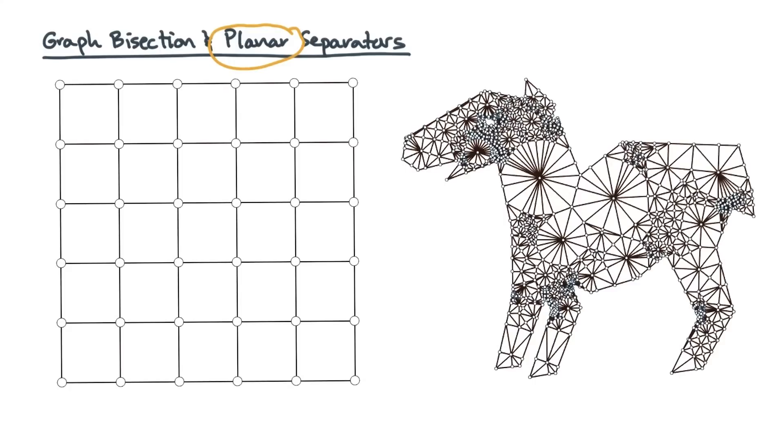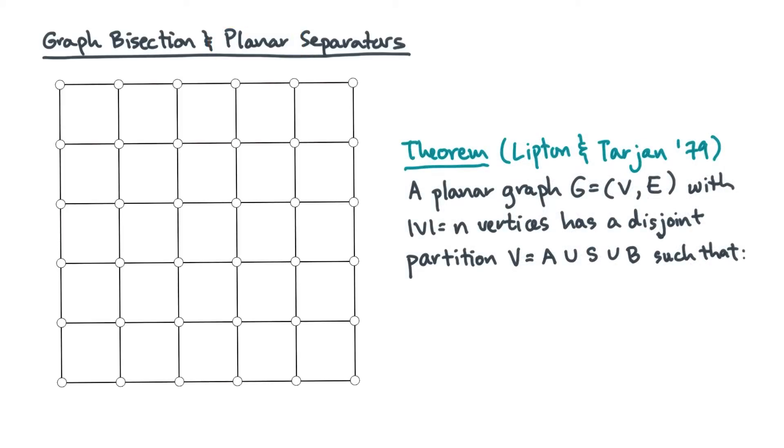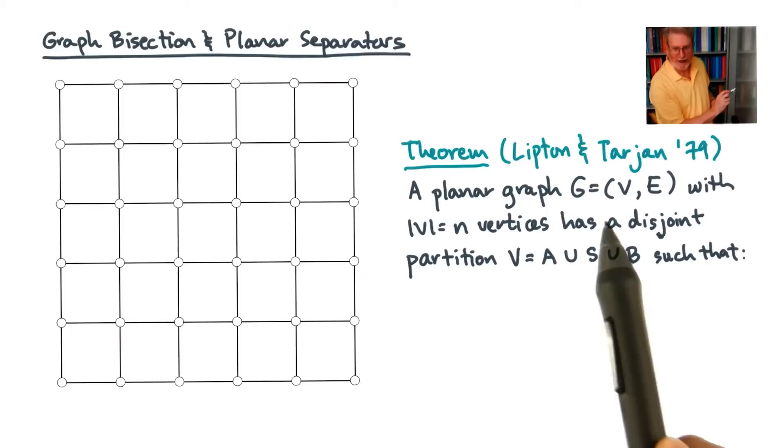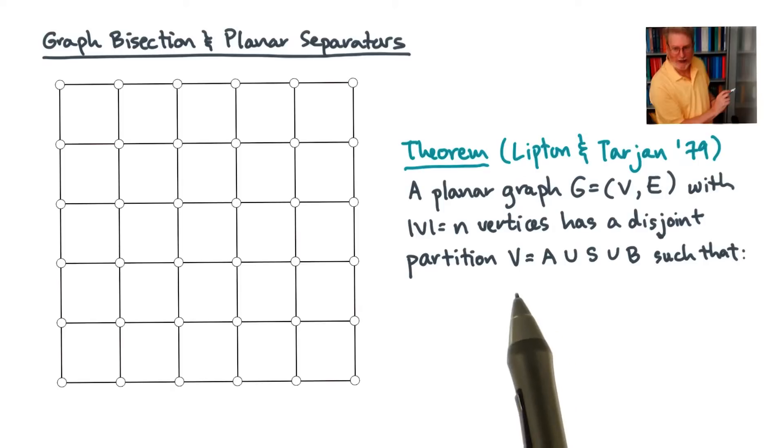For planar graphs, there's a really neat theorem. This theorem is, in fact, due in part to Georgia Tech's very own Dick Lipton. Anyway, the theorem goes like this. Given a graph with n vertices, the theorem says that there's a way to partition the vertices into three disjoint sets, A, B, and S,